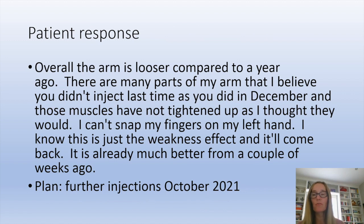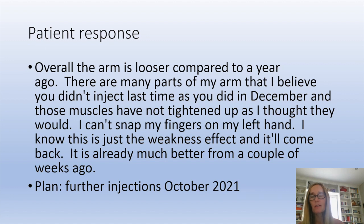His impression was that overall the arm is looser compared to a year ago before we started. He thought that several areas we hadn't injected in May — but had injected in December — still hadn't tightened up yet as he expected, so he was getting some carryover and overall improving his function. It wasn't just the Botox; the gabapentin and the stretching were really helping too. He noticed he couldn't snap the fingers on his left hand, but that weakness effect was already starting to come back even compared to two weeks earlier. The current plan is for more injections in October.